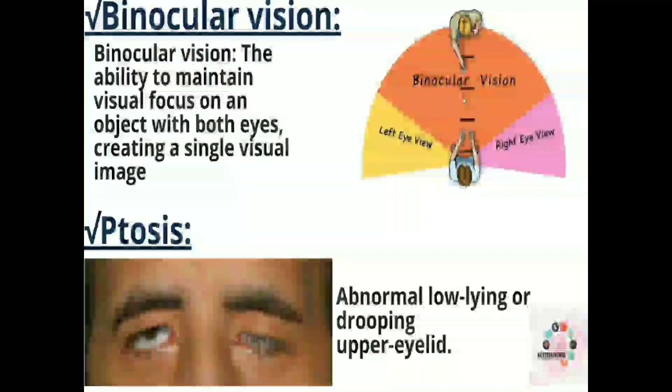Next is trichiasis — abnormal low-lying or drooping of the upper eyelid, as you can see in the picture.